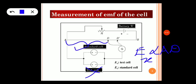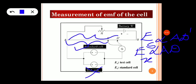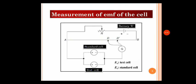In the second step, the test cell is replaced by the standard cell. The sliding contact is again moved along the wire AB until the null point is found — again, the null point indicates no current flows in the galvanometer. The second null point is at length AD'. Therefore, E subscript S is directly proportional to AD'. This is the procedure for measuring EMF using the potentiometer.